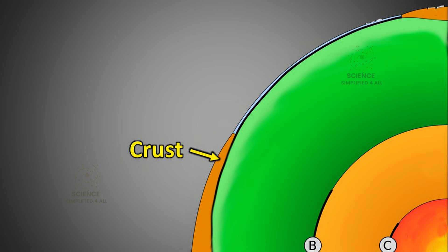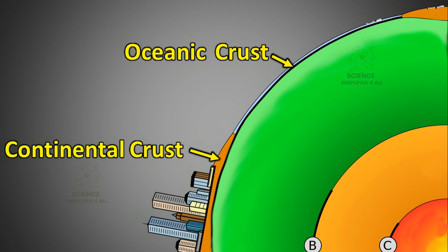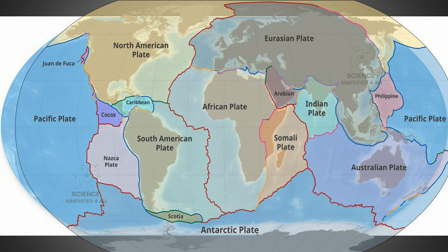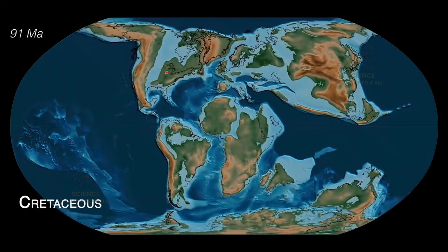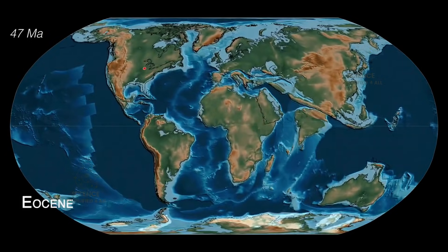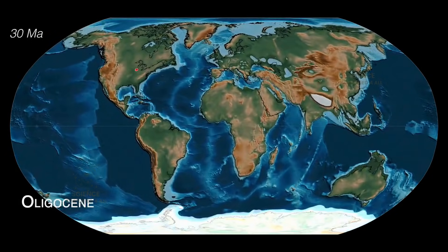The outermost layer of the earth is called the crust. It has two types: the continental crust, which forms the land, and the oceanic crust, which lies beneath the oceans. On average, the continental crust is about 35 kilometers thick, while the oceanic crust is about 7 kilometers thick. Both are completely solid. However, the crust is not a single continuous piece — it is made up of several separate slabs called tectonic plates. These plates are constantly moving relative to each other, and such movements are what cause earthquakes.